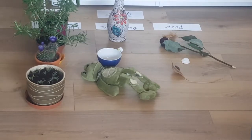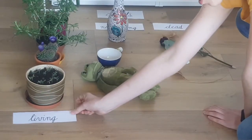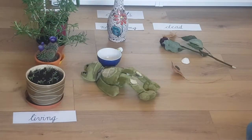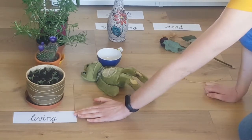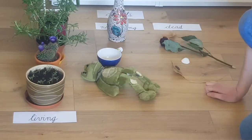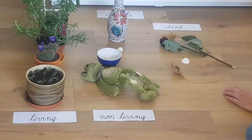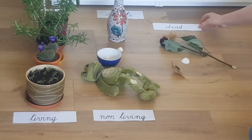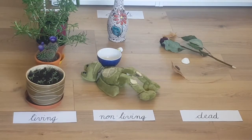Alright guys, it seems like we matched all the objects to our groups. Let's repeat. Living objects are those who can grow, move, eat and reproduce — so mostly plants and animals are in this category. We are also living objects. The next group is called non-living objects — those are the objects that cannot do anything that living objects do. And the last group is called dead objects — these are objects that were once alive, so they could breathe, eat, move and reproduce, but they cannot do it anymore.